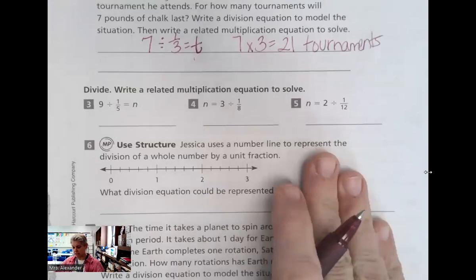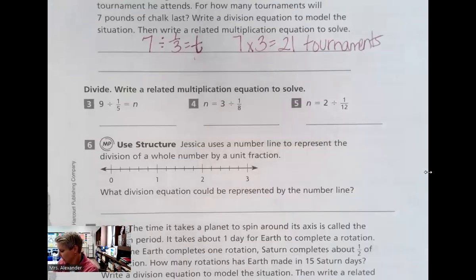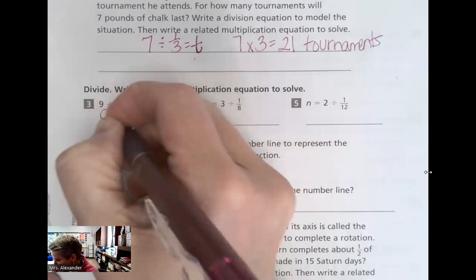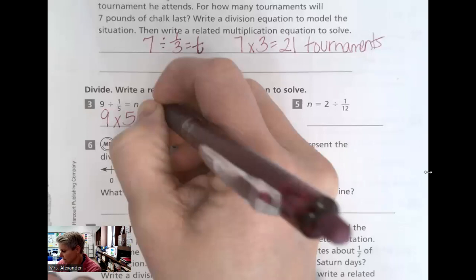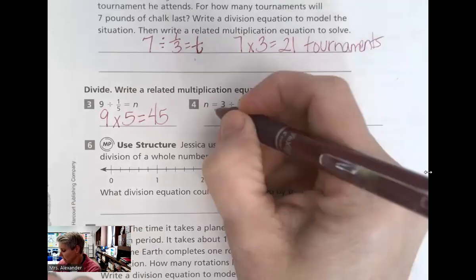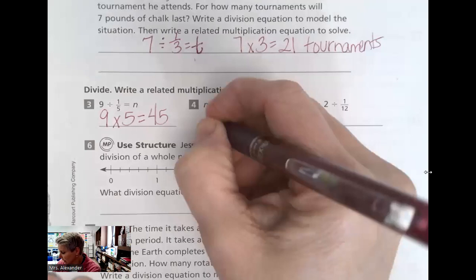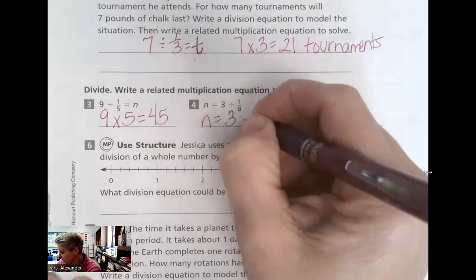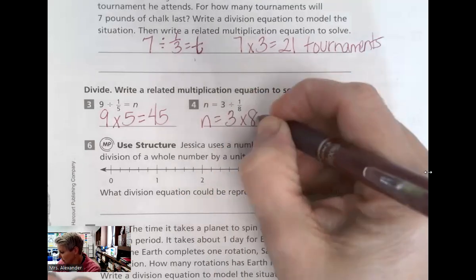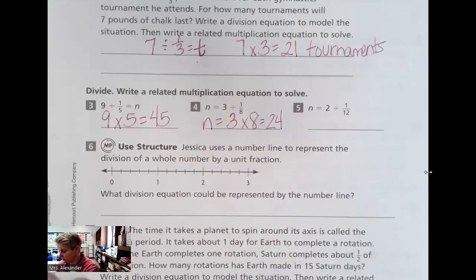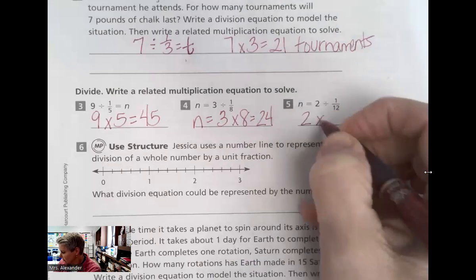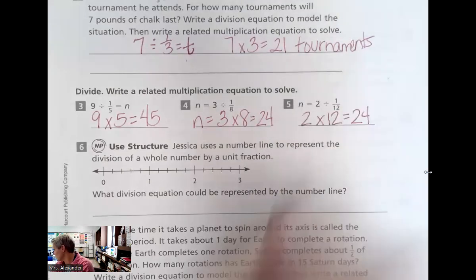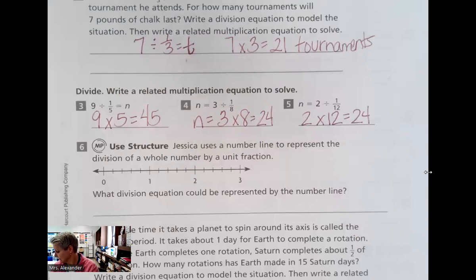Related multiplication equations. Let's use our keep, change, flip. Keep, change, flip. N equals 45. Here, it's written backwards. We do the same thing. Our answer will equal keep, change, flip, which is going to be 24. Or same thing. We could even do keep, change, flip, and equal another 24. Good.